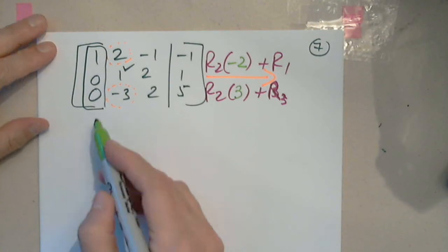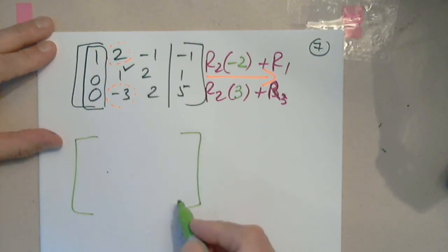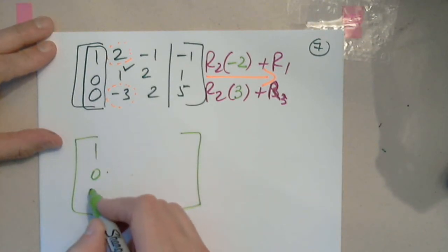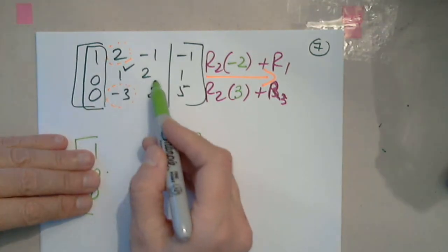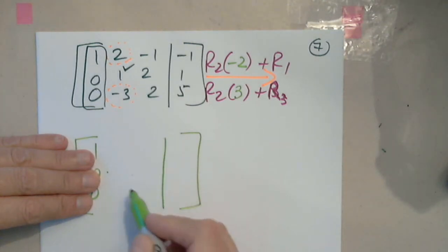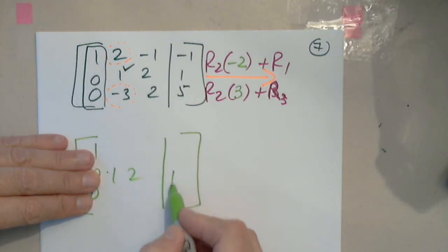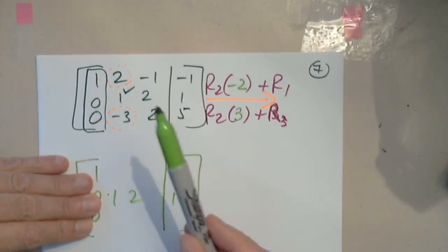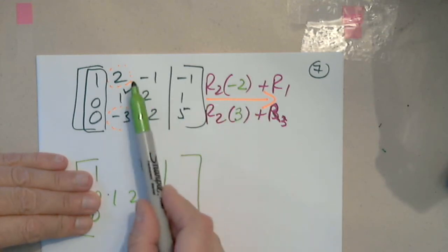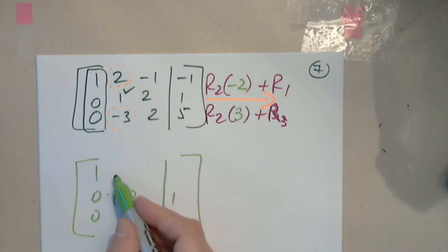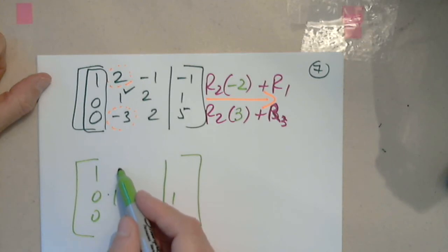Moving on. Which row do I have to copy for sure? Because I'm using it. Row 2. So 1, 2, 1. Let's see what we get. 1 times negative 2 plus 2. Zero.